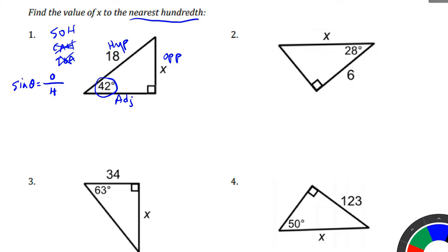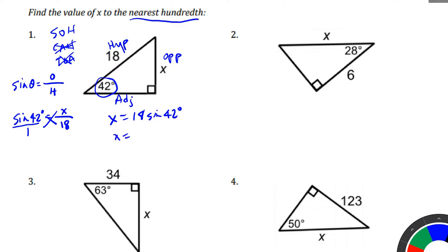Now if we plug in what we know: the angle is 42 degrees, the opposite side is x, and the hypotenuse is 18. We can cross-multiply to get x by itself, giving us x equals 18 times sine of 42. At that point, we type this into our calculator — just type 18 times sine of 42 — and you should get 12.04.